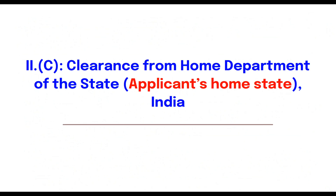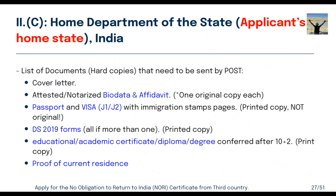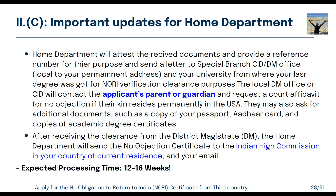Once police send confirmation to the RPO, the RPO will issue a No Objection clearance and send it to your email, and also forward it to the Indian High Commission where you had your documents attested. The expected processing time is 8 to 12 weeks. For Home Department clearance, send the same documents offline — make two separate packets, one for the RPO and one for the Home Department of your state.